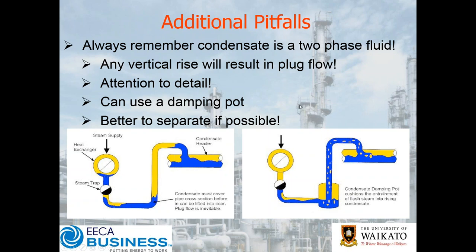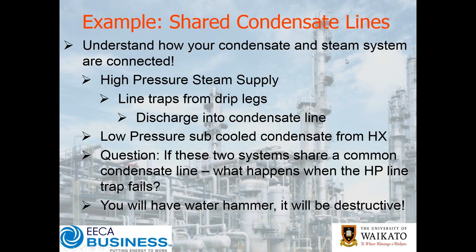The alternative — and actually better — is to actually separate the two and use your flash steam separately if you can. You could potentially put a vent condenser on your condensate tank and use that to preheat some other duty rather than just having it all disappear down your condensate line. There are different solutions — especially if you're talking about traps after a heat exchanger — and having a flash steam section with a flash vessel to separate the two is obviously the best way to go about that.